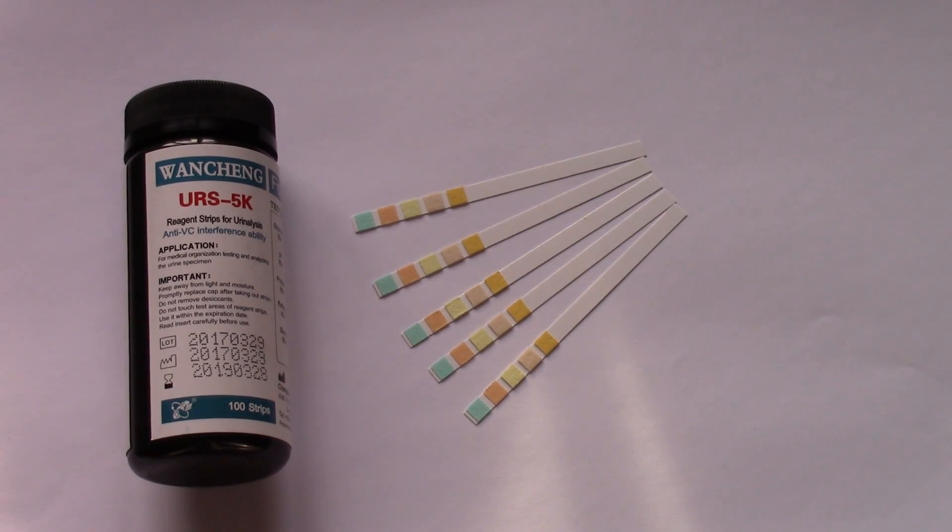A 5K product means it's got five parameters or five pads on it and the K refers to ketones because you can have different combinations of five on these. A 5K is a good combination because the combination of tests allow you to screen for quite a few things, common things that you're going to be interested in buying a test strip for.